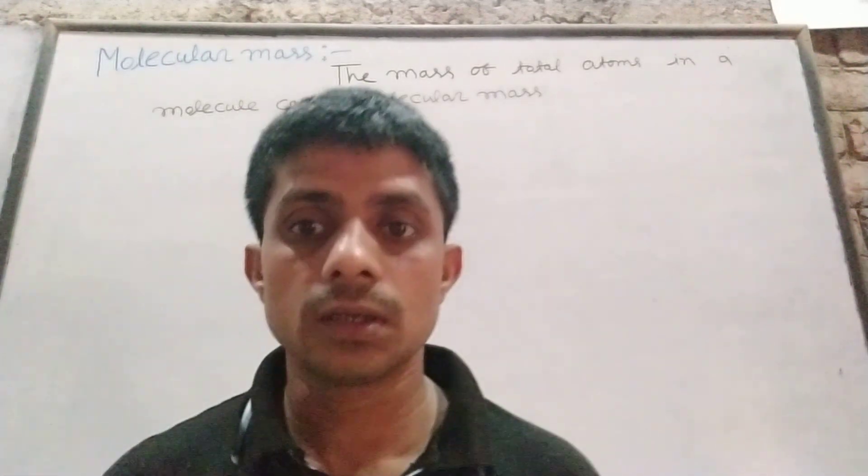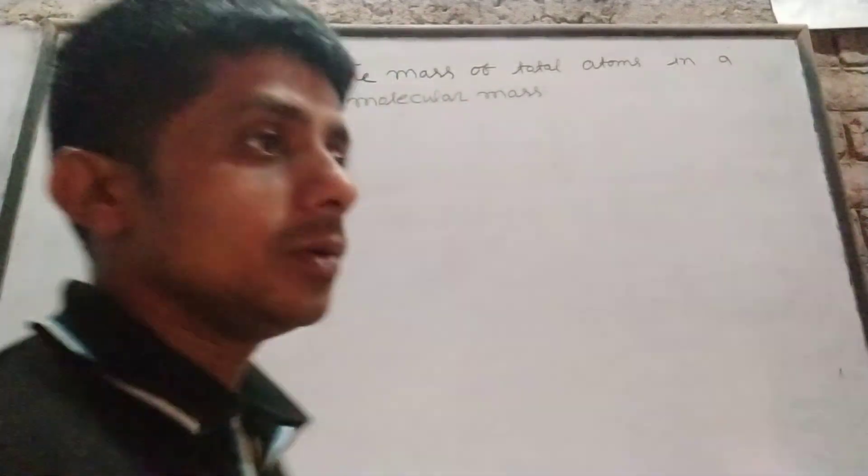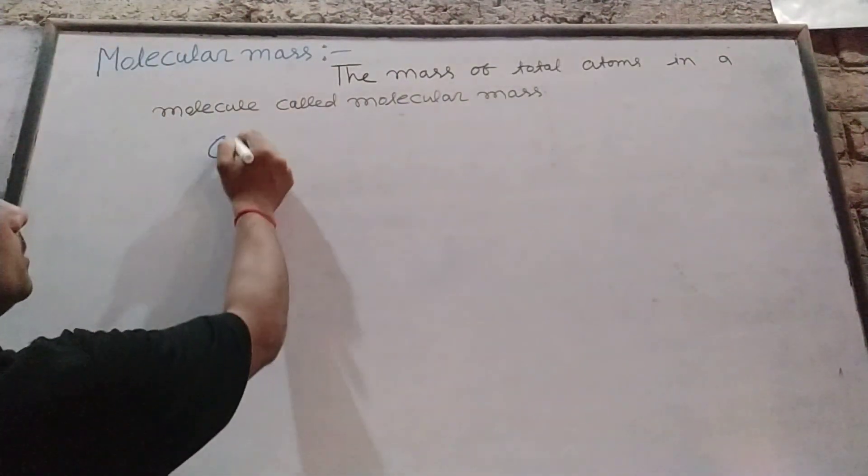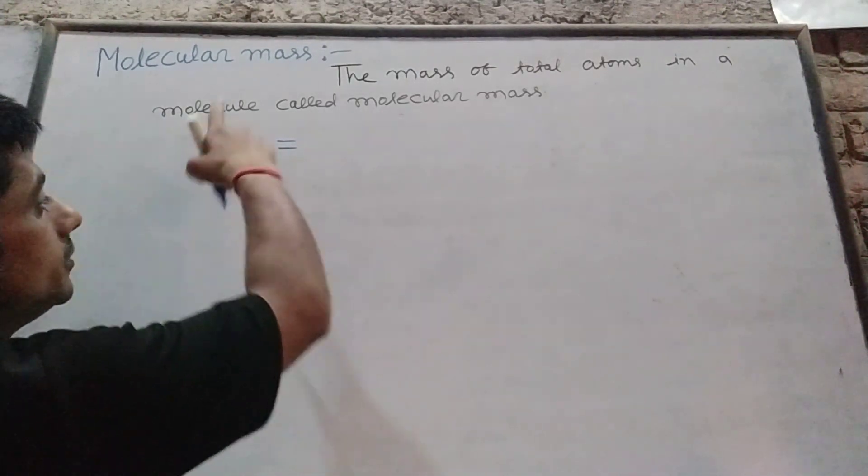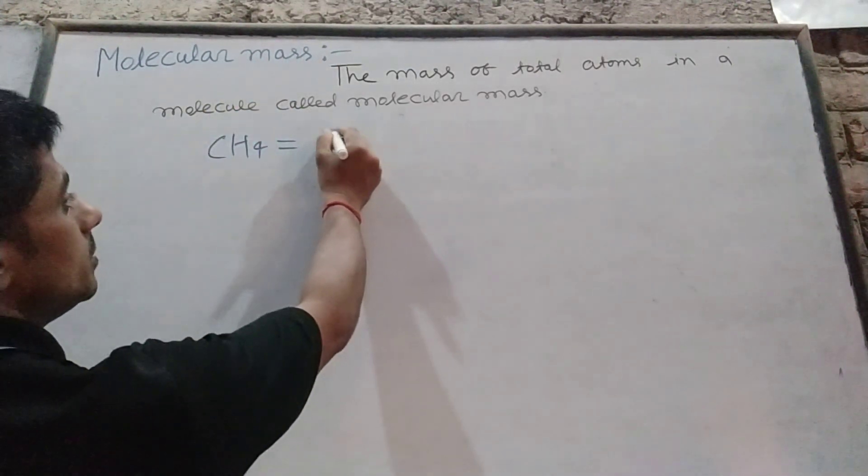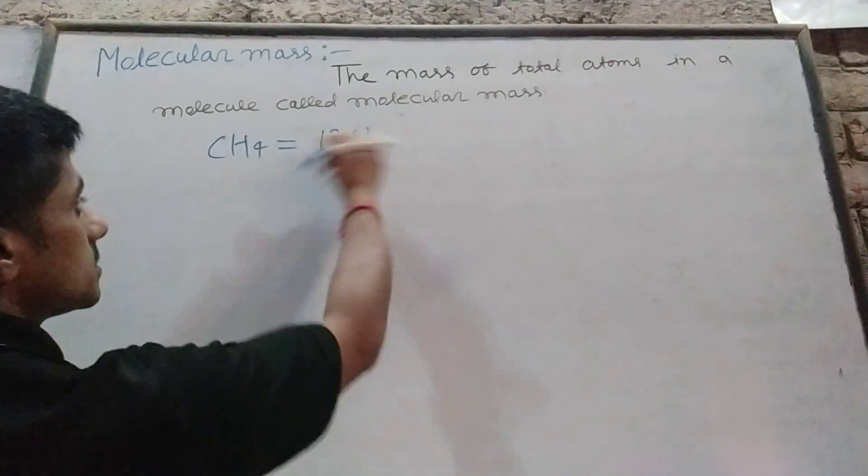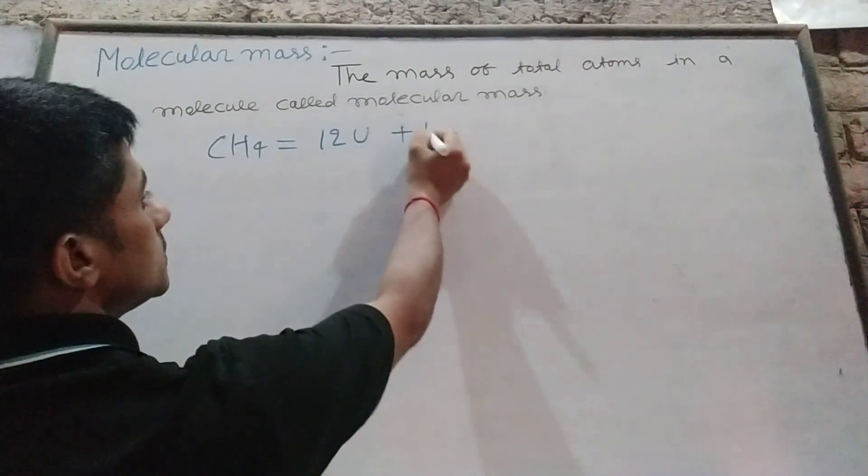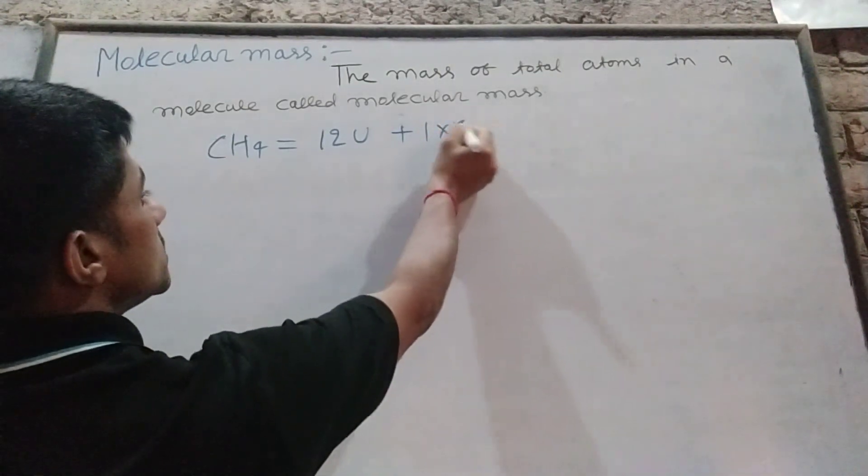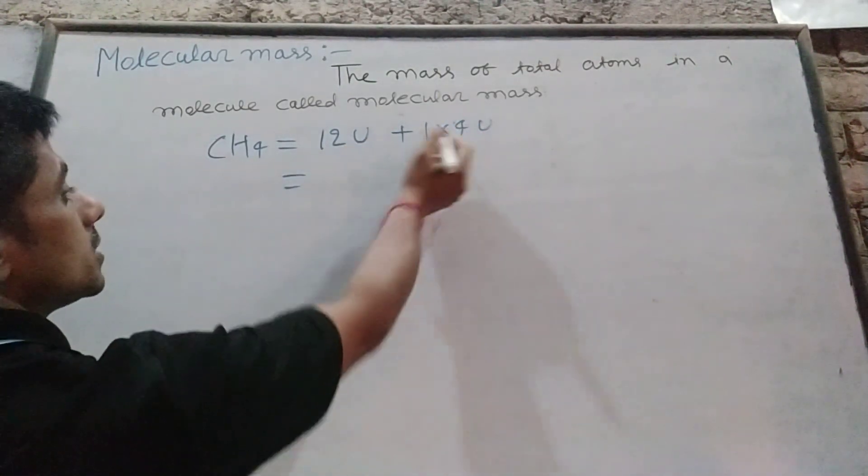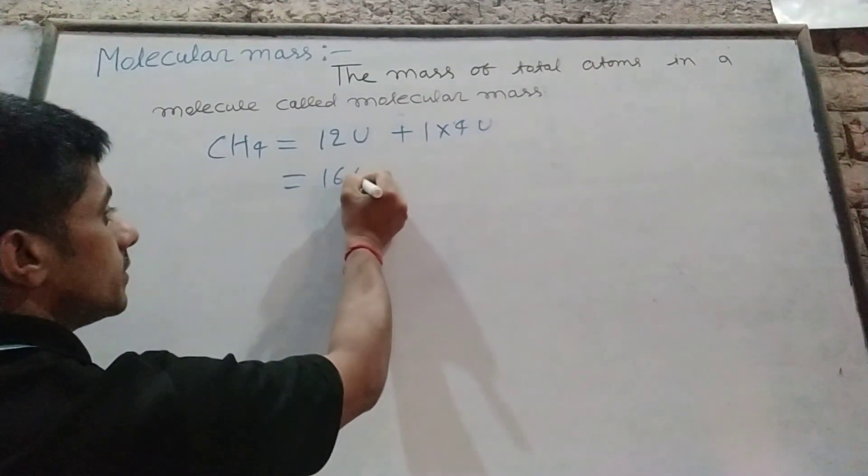For example, we use methane. In methane, the carbon is 12 U and hydrogen is 1 U. So one into four, which means 12 plus 4 is 16 U.